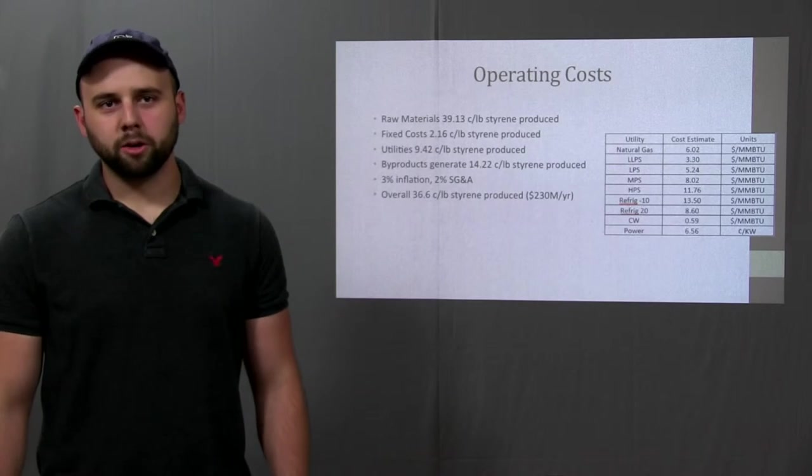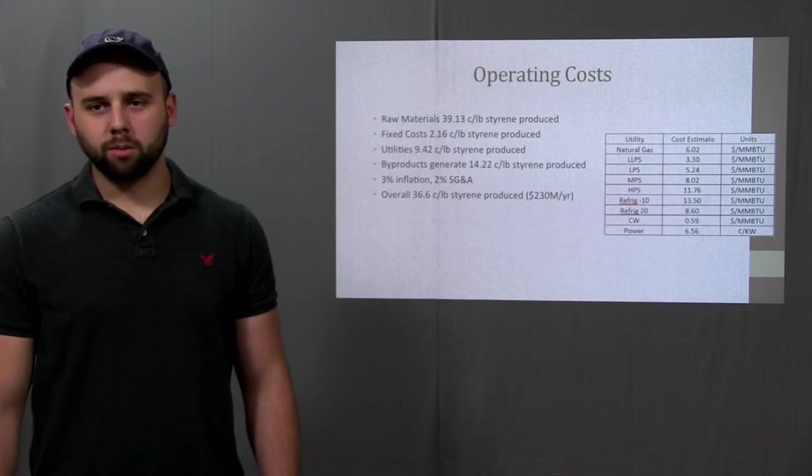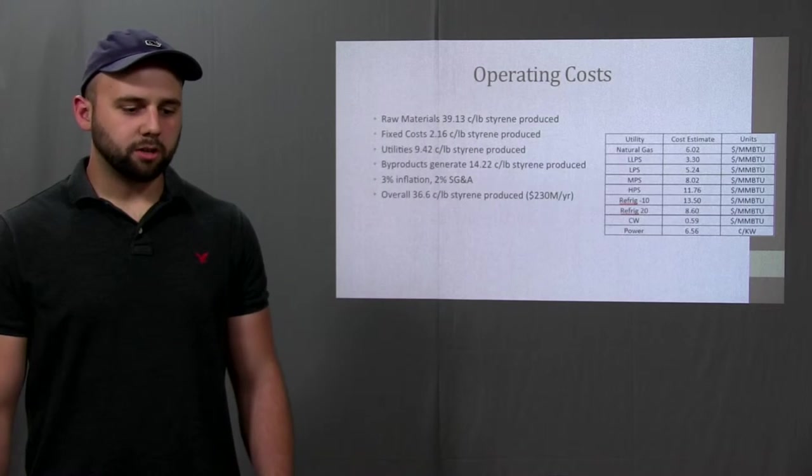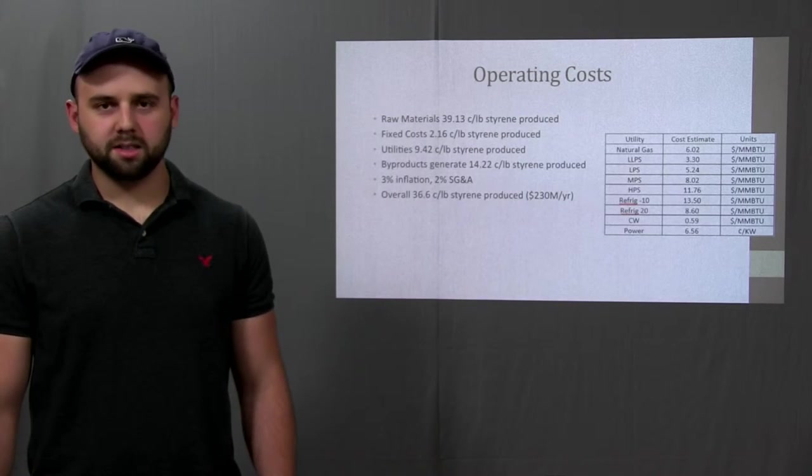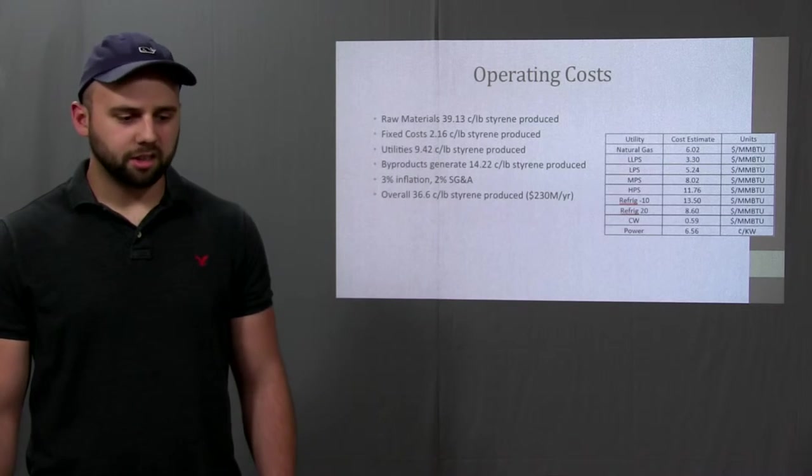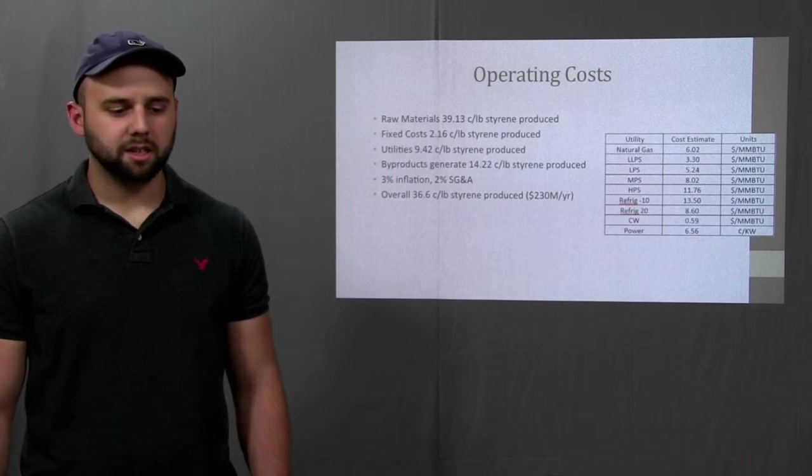Another big component of the economics of the process was operating costs. These are broken down into raw materials, fixed costs, and utilities. Raw materials included the C4 feedstock, steam, oxygen, catalyst, inhibitor, and other miscellaneous chemicals, individual prices of which will be discussed in the next slide.